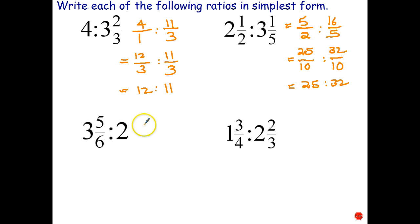Third question. Write the first number as an improper fraction. 6 times 3 is 18 plus 5 is 23 over 6. And the second one we just write as 2 over 1. Any whole number can be written with 1 in the denominator. So 6 is going to be our common denominator. 23 over 6 stays the same. 1 times 6 is 6, 2 times 6 is 12.